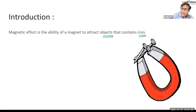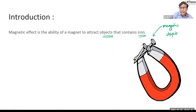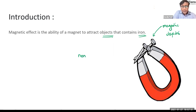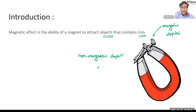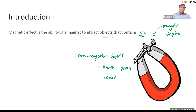The definition says magnetic effect is the ability to attract objects that contain some iron. Magnets can attract iron, or objects that have some iron or properties like iron. Whatever objects get attracted by the magnet, we are going to call those magnetic objects — for example, iron. The others which the magnet does not attract we are going to call non-magnetic materials or non-magnetic objects. Examples: plastic, paper, wood — these are materials which a magnet cannot attract.